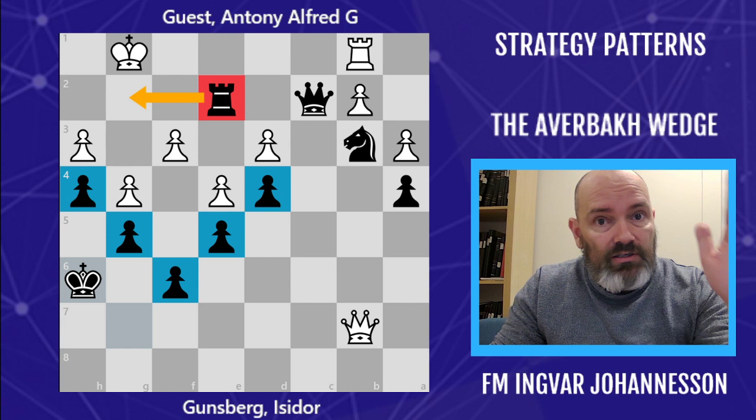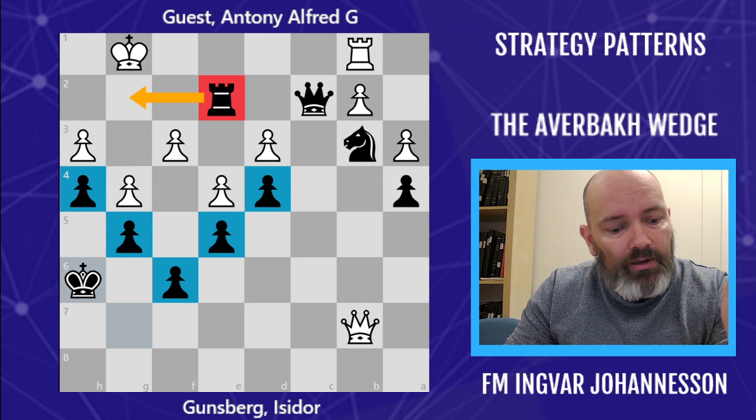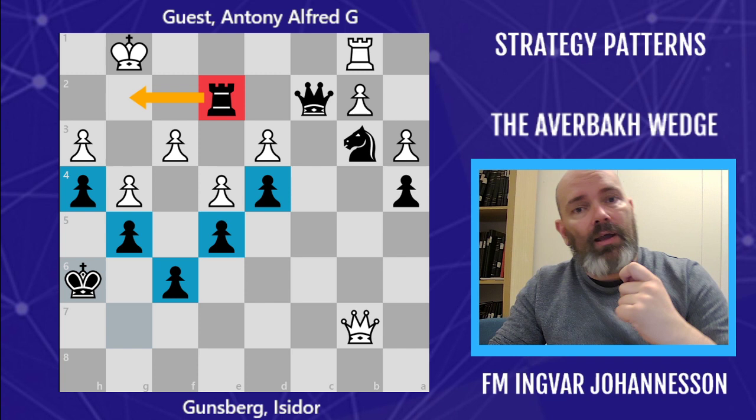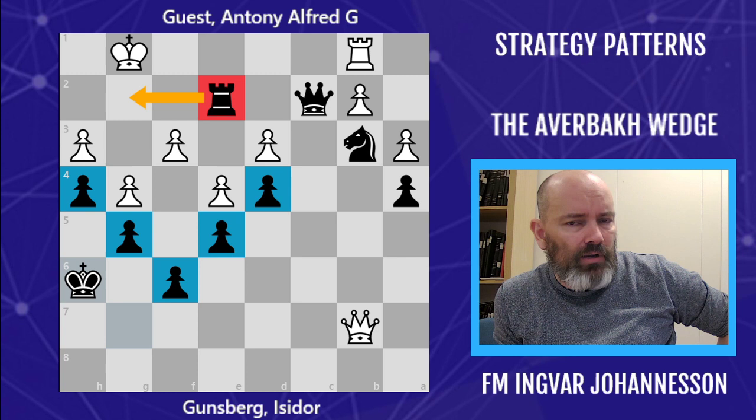I hope the lesson was useful. Call this the Averbach Wedge, from the Averbach variation, named after Yuri Averbach — a very important pattern for me. It enabled me to win two important games, one of which was in a norm tournament. I hope it will be good for you too. It's something you can apply when your opponent plays a slow modern-type setup, and it can arise with both colors. Definitely something that can and probably will arise in your games — so take note and improve. See you next time, bye!